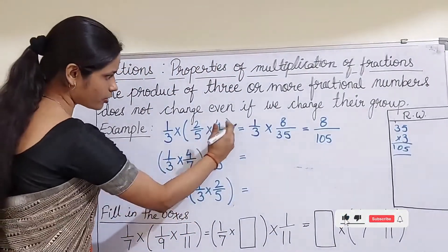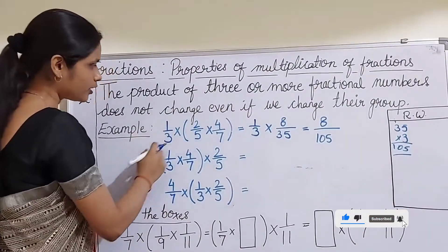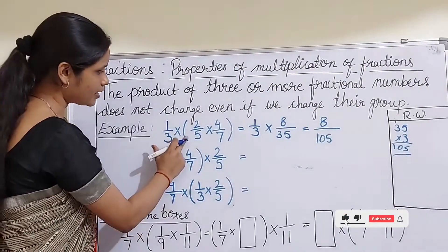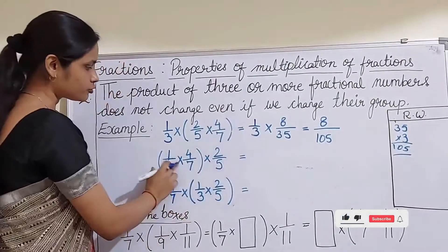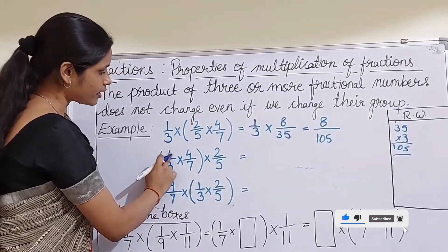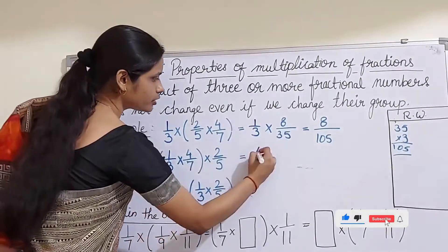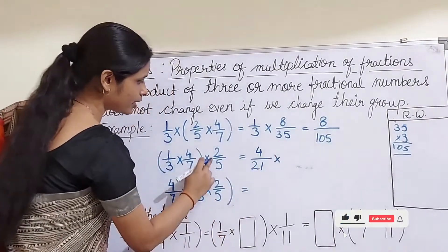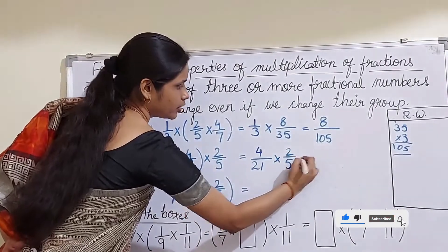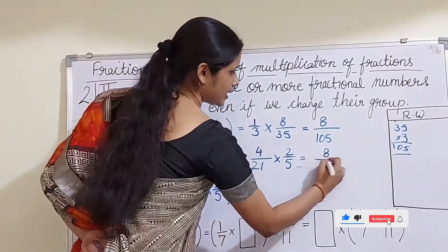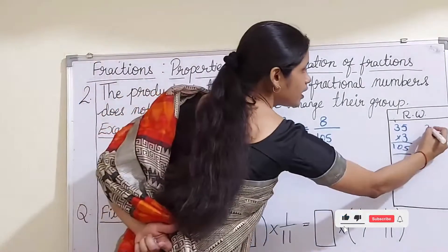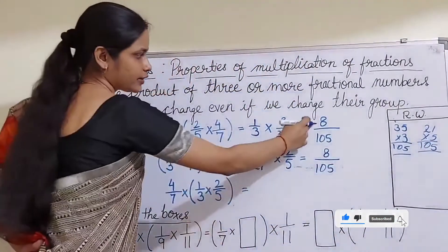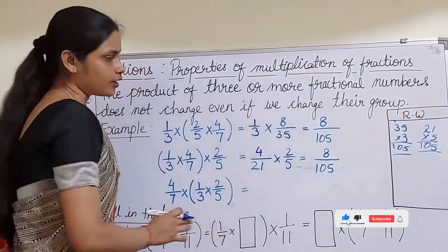Now let us change the grouping. This time I have taken (1/3 × 4/7) in the bracket and 2/5 outside. Solve the bracket first: 1 × 4 = 4 in the numerator, 3 × 7 = 21 in the denominator, giving 4/21. Then multiply by 2/5: in the numerator 4 × 2 = 8, and in the denominator 21 × 5 = 105. So the product is again 8/105.